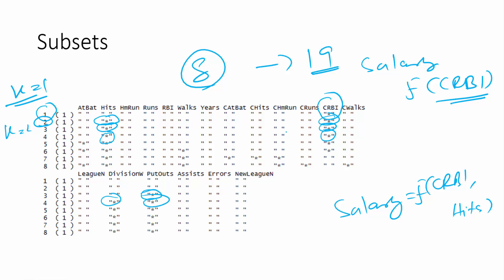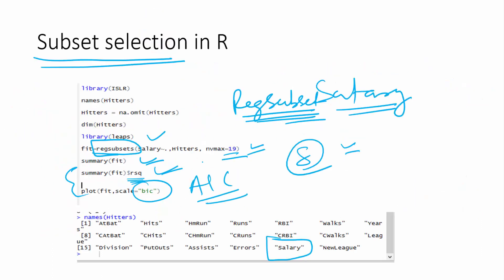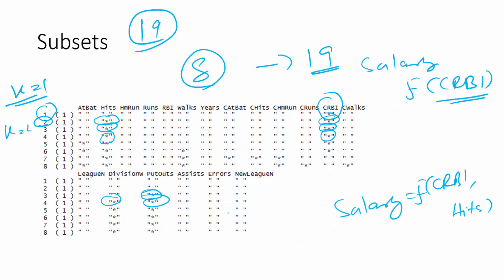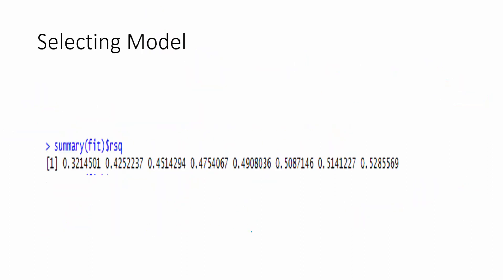So that's the way it goes up to an eight-variable model. There are 19 total variables. You can actually extend that to 19 — for that you just have to use the nvmax syntax. Then out of the 19 finalized models, you have to choose what is the best one.